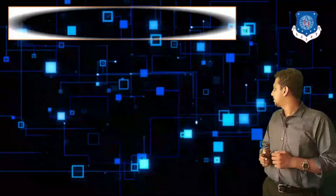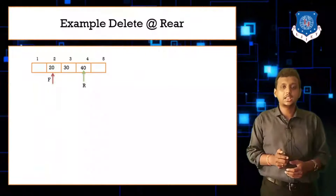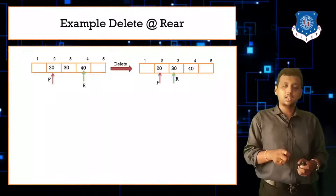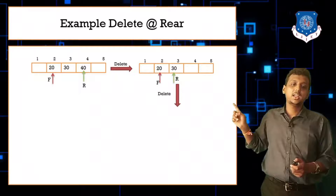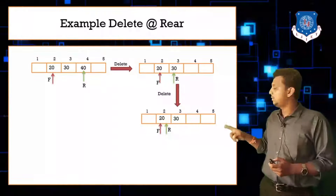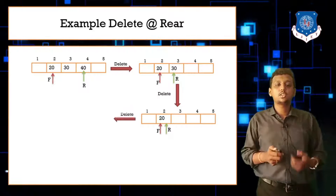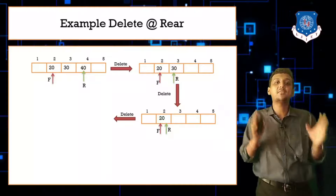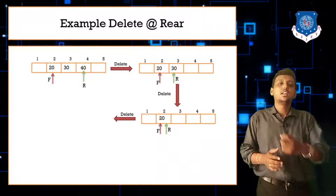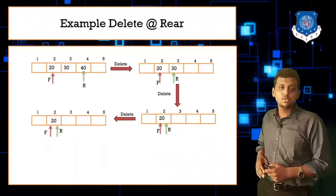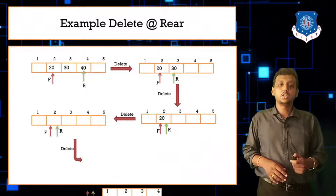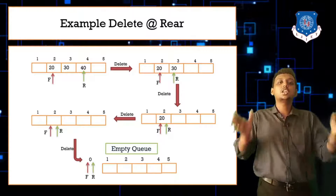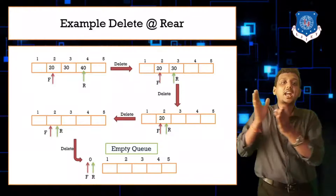Here is the example: the queue has 20, 30 and 40. Delete 40 — rear is decremented, 40 is removed, rear goes back one. Delete 30 — rear is decremented again, 30 is removed. Delete 20 — F and R are now at the same position, so after deleting 20, both F and R move to 0 and the queue becomes empty.